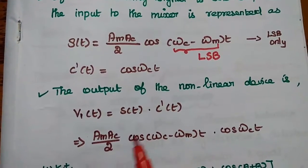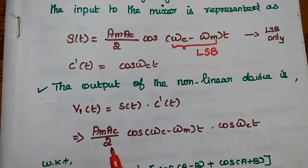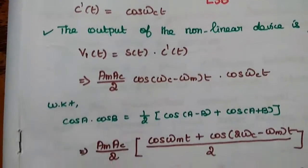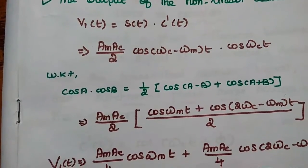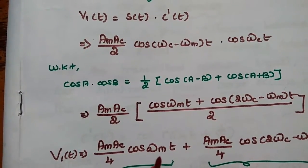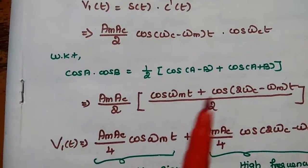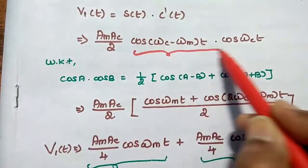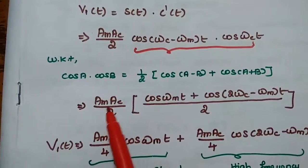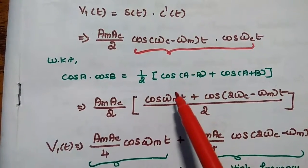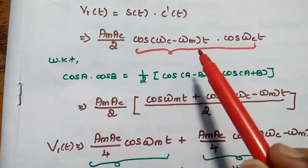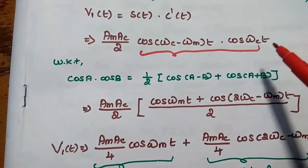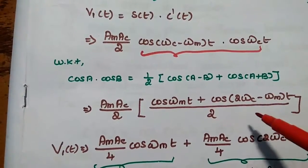Multiplying both signals, we get (A_M · A_C / 2) · cos((ωC − ωM)·t) · cos(ωC·t). Using the identity cos(A)·cos(B) = (1/2)[cos(A − B) + cos(A + B)], we can expand this expression to get (A_M · A_C / 2) · (1/2) · [cos(ωC − ωM − ωC) + cos(ωC − ωM + ωC)].